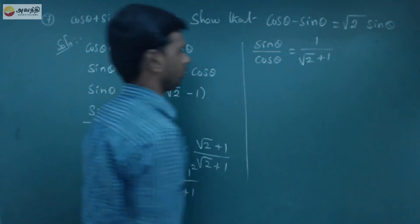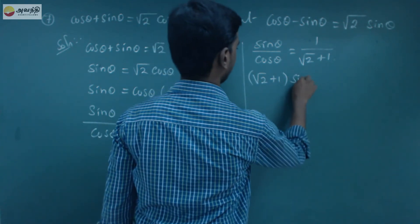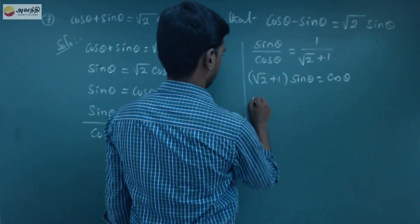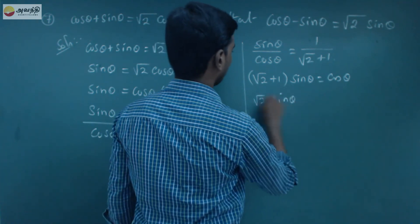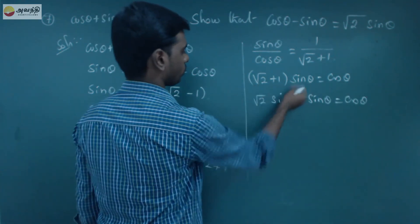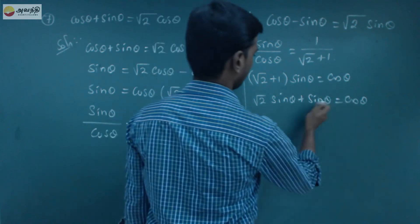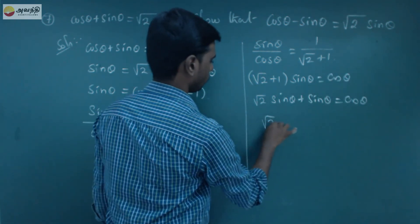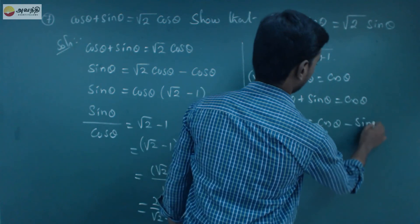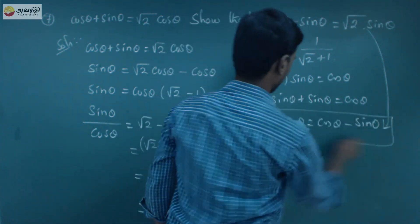By cross multiplication: root 2 plus 1 into sinθ equals cosθ. Expanding: root 2 sinθ plus sinθ equals cosθ. Rearranging, cosθ minus sinθ equals root 2 sinθ. Okay, let's go into the proof.